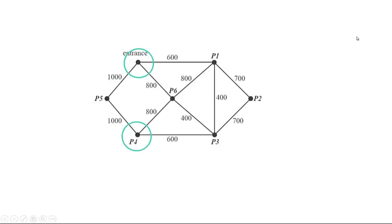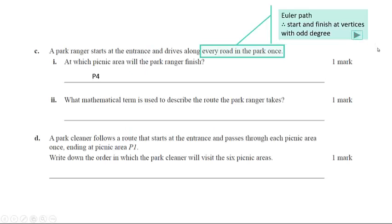So if we go back to our original graph and check all of our vertices, we can see that P4, the picnic area 4, gives us that odd vertex. So therefore in our answer here we're going to finish at picnic area 4.